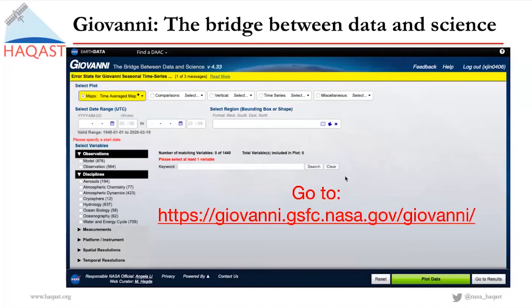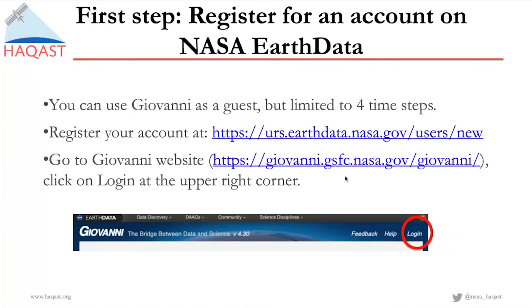To go to Giovanni, you can just type in this address which I'm showing on the right here, or you can Google 'NASA Giovanni.' Giovanni is developed by NASA Goddard. If you are the first time to use Giovanni, you may get a warning message saying that you will have limited access as a guest. In order to have full access, you will need to register for an account on NASA Earthdata — maybe you already have this account if you have already downloaded data from NASA's website.